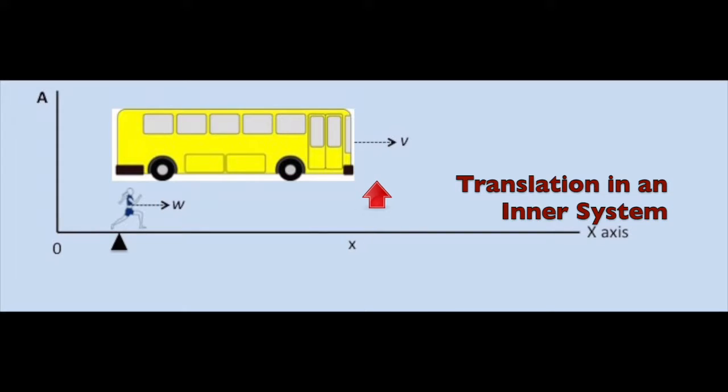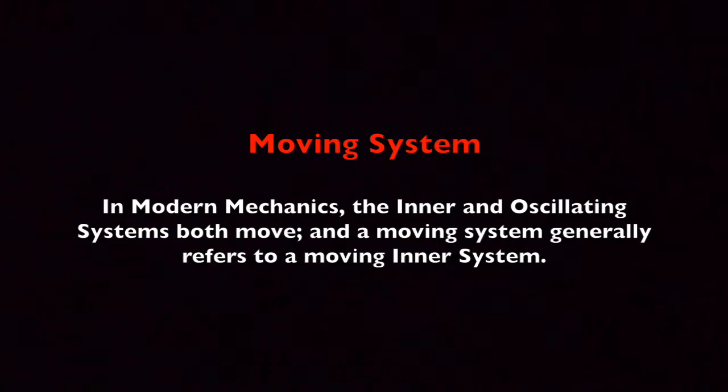One note on terminology. In modern mechanics, both the inner system and the oscillating system can move. So technically, both can be referred to as a moving system. However, to show how modern mechanics is related to these other models, I will use the term moving system to mean moving inner system.